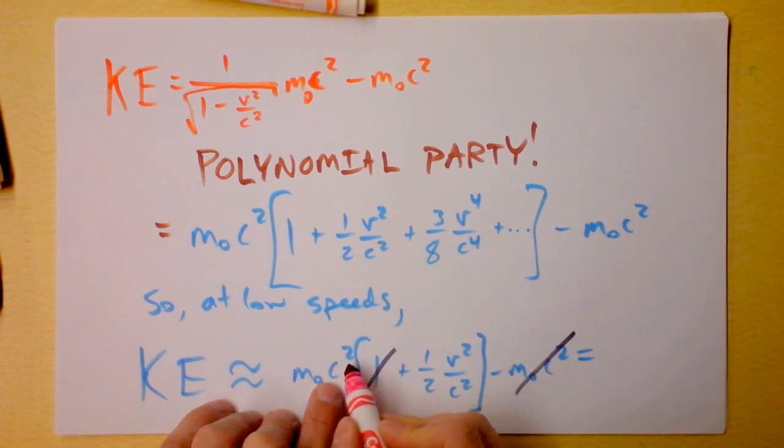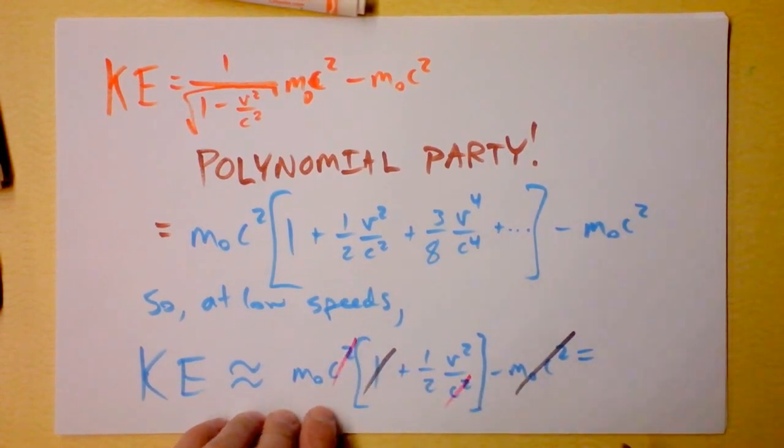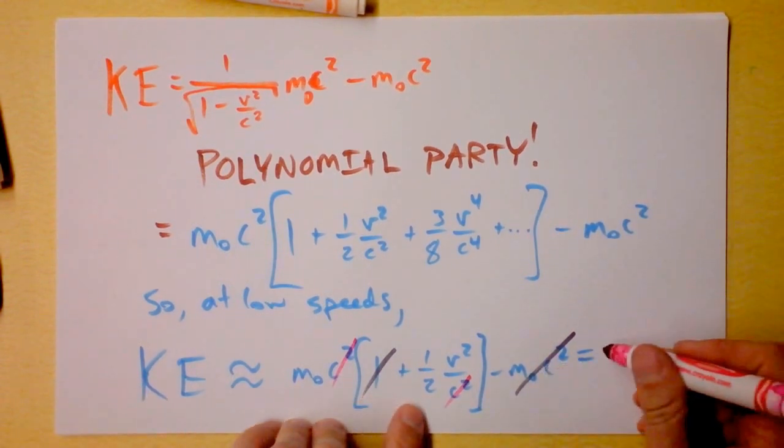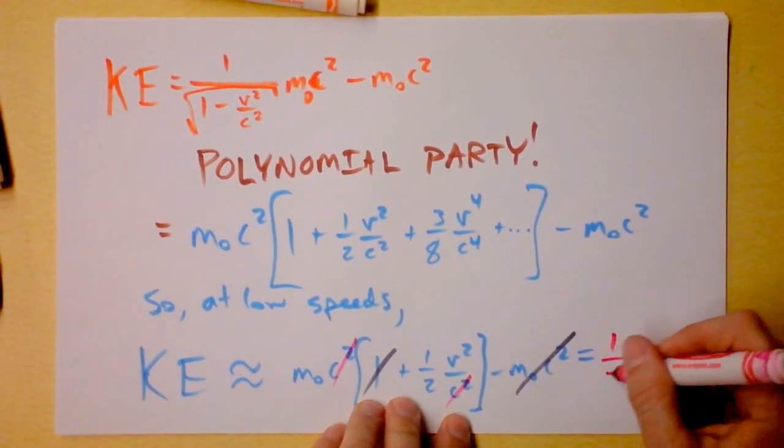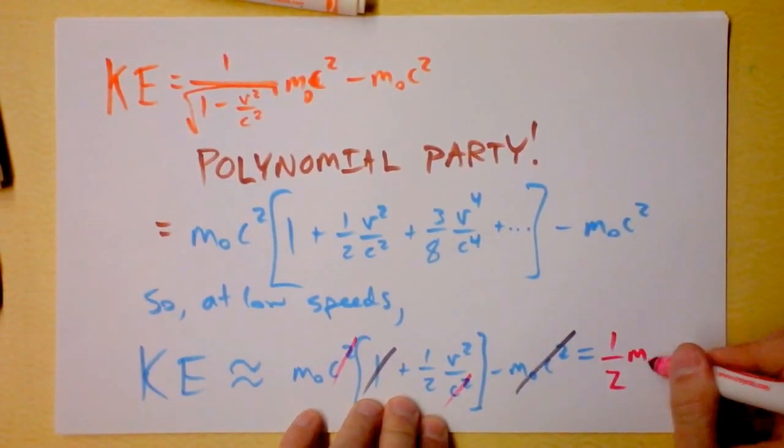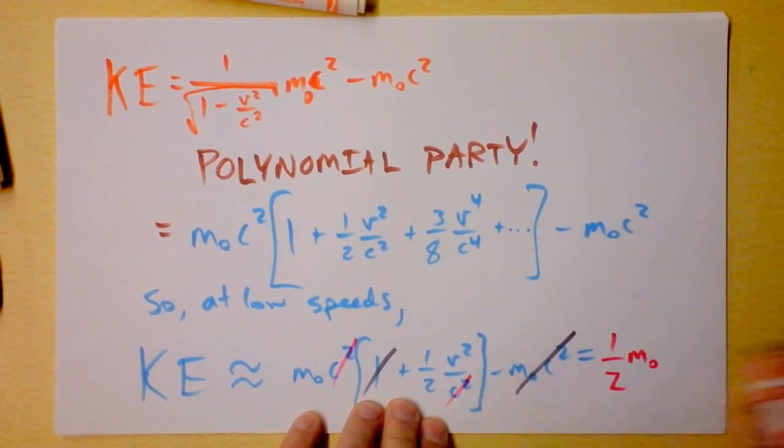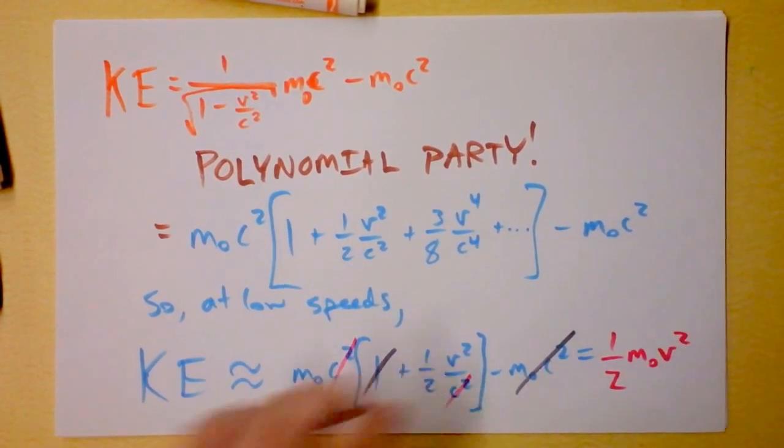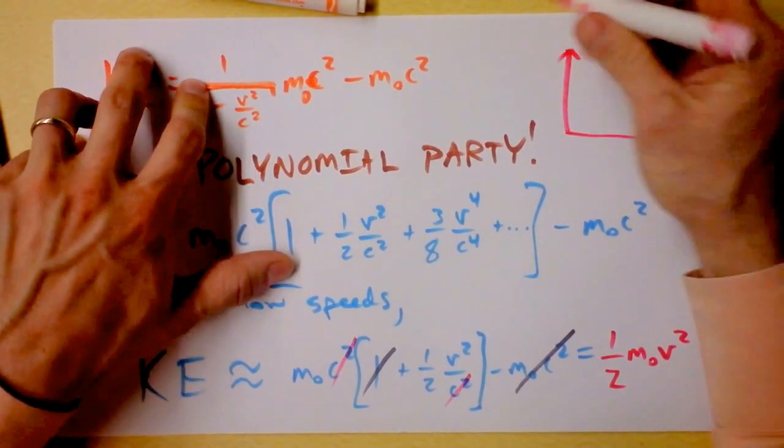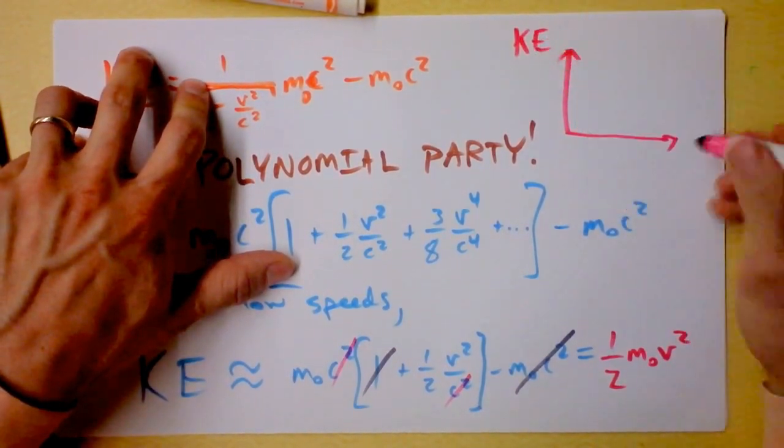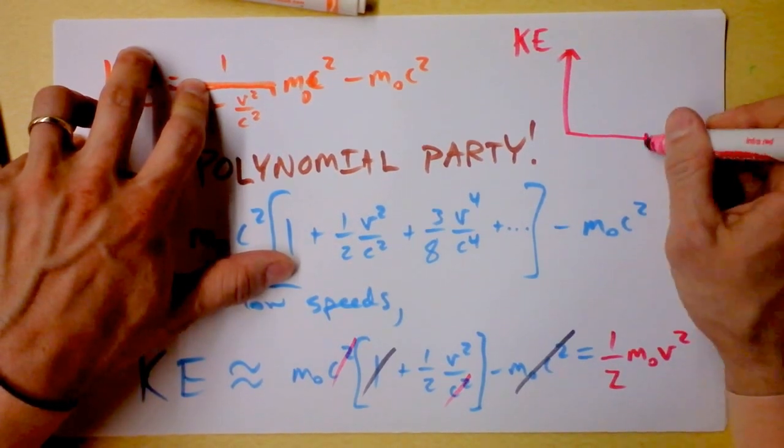Wait a second, drumroll please. Kinetic energy is approximately equal to 1/2 m₀v². What? We knew that already! Yay! Let's make a graph - one final graph of kinetic energy as a function of speed.